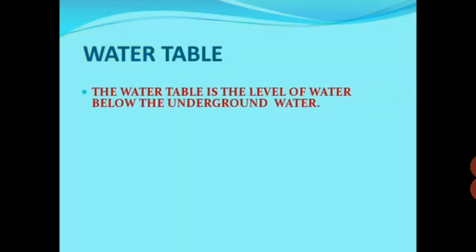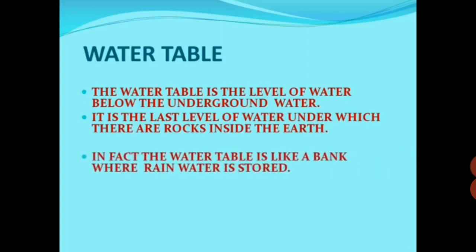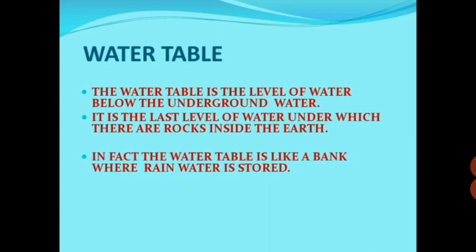Water table is the level of water below the underground water. You have learnt about underground water. Below the underground water is a water bank — meaning a lot of water is stored there. Water table is the last level of water under which there are rocks inside the earth, so the water cannot cross the rocks and go deeper. The water table is like a bank where rain water is stored.